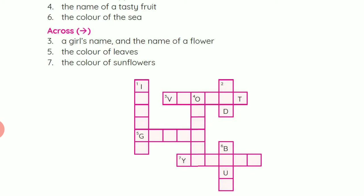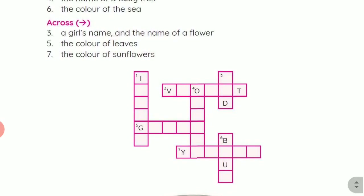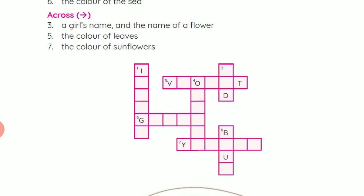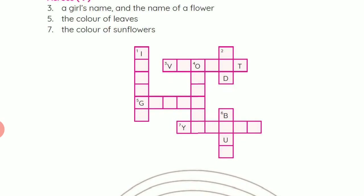Now across. A girl's name and the name of a flower — that is violet: V-I-O-L-E-T. Five, the color of leaves — that is green. The color of sunflowers — that is yellow. Seven — okay, this is all.